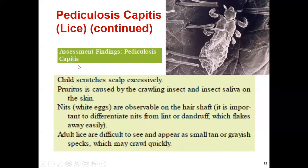The assessment findings of pediculosis capitis include pruritus of the scalp, visible lice, or nits (louse eggs) in the hair. Nits may look like grains of rice. The child scratches the scalp excessively. Pruritus is caused by the crawling insect and insect saliva on the skin.